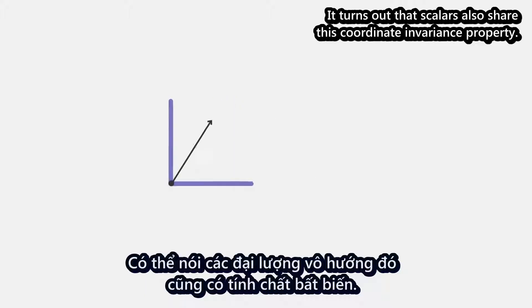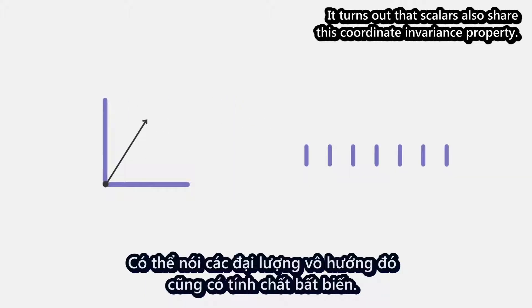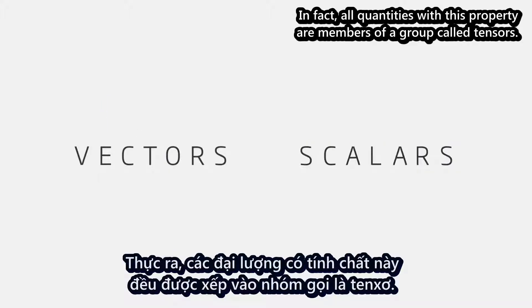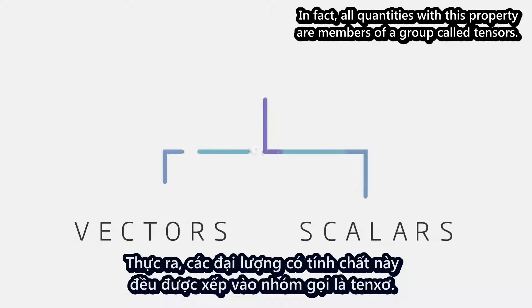It turns out that scalars also share this coordinate invariance property. In fact, all quantities with this property are members of a group called tensors.